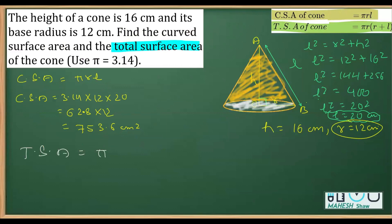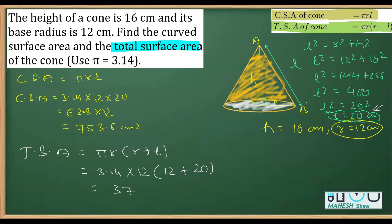Total surface area formula is π r (r + l) = 3.14 × 12 × (12 + 20) = 3.14 × 12 × 32. First, 3.14 × 12 = 37.68, and 37.68 × 32 = 1205.76 cm².